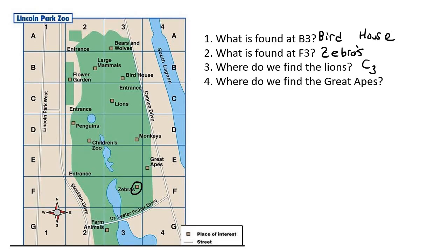And then where do we find the great apes? The great apes are over here. So that's letter E and block, or column four. So that's going to be E4.